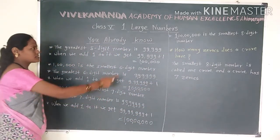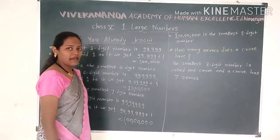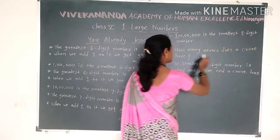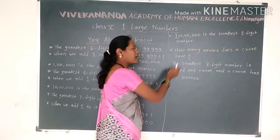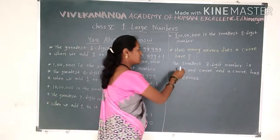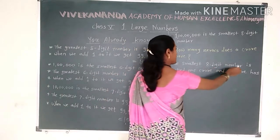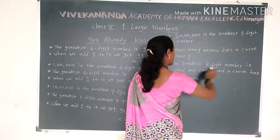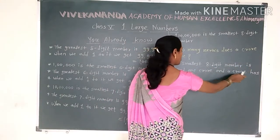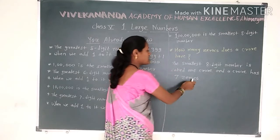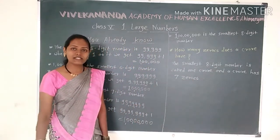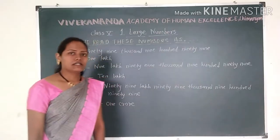1 crore is the smallest 8-digit number. How many zeros are there? 1 crore has 7 zeros.